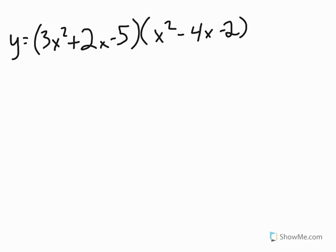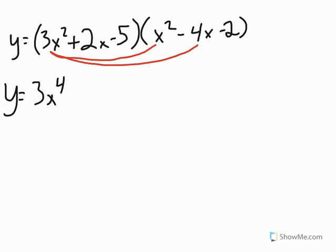And we're going to use distribution to do that. And remember, you have to multiply everything in the first one times everything in the second one. So when I go ahead to get started with this, I'm going to do y equals, and then I'm going to take the 3x squared and I'm going to multiply it by the x squared. And 3x squared times x squared is going to give me a 3 times x to the 4th, because you add those exponents.